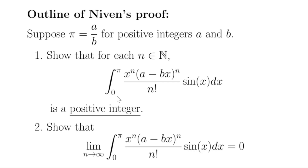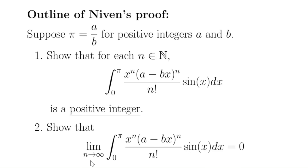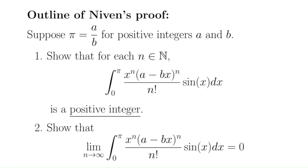We're integrating from zero to pi of sine of x times this polynomial of degree 2N, where a and b come from how we've written pi. The second step is to show that as N approaches infinity, that integral approaches zero. But this is a contradiction because positive integers can't approach zero — you can't have a positive integer that's less than one half.